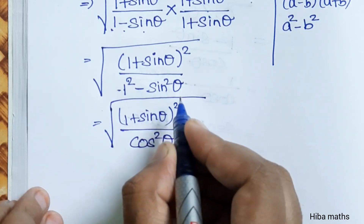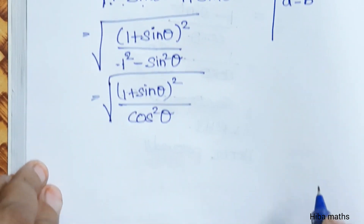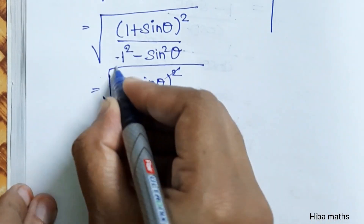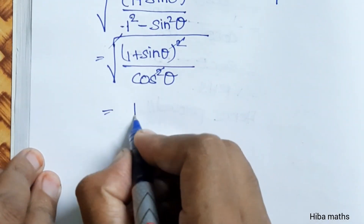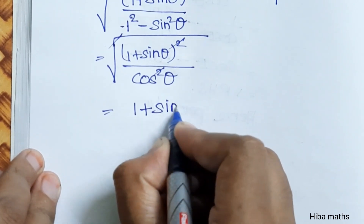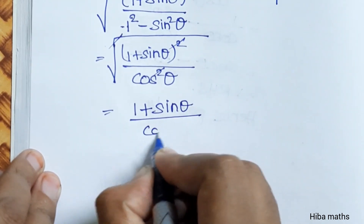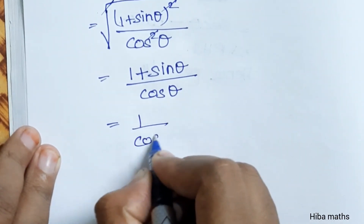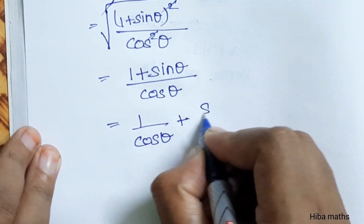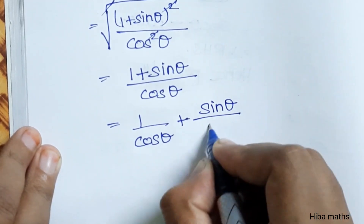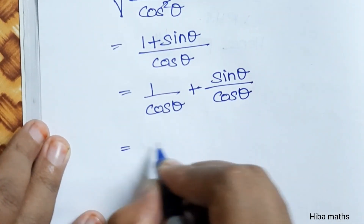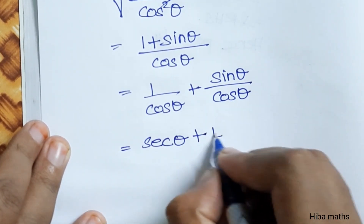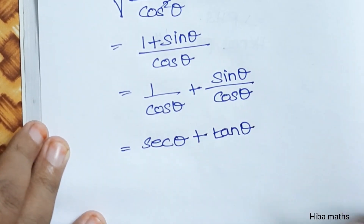Since 1 minus sin squared theta equals cos squared theta, taking the square root gives us (1 plus sin theta) divided by cos theta. This can be written as 1 by cos theta plus sin theta by cos theta, which equals secant theta plus tan theta.